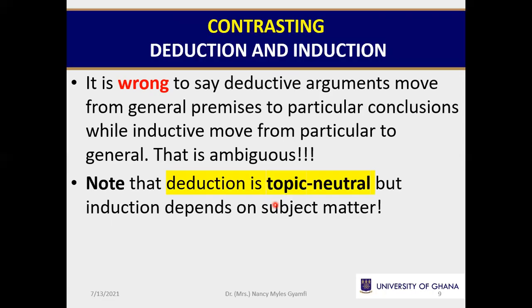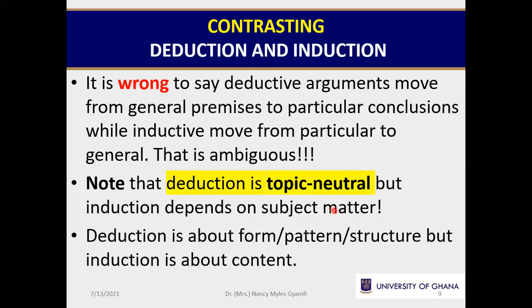The correct way to distinguish deduction from induction is what we gave you earlier. For a deduction, if the premises are true, it would require that the conclusion must also be true — otherwise you will create a contradiction. For induction, it is possible for the premises to be true, the conclusion false, and yet no contradiction is created. This is the litmus test. Also, we have already seen that deduction is topic neutral — a deductive argument is neutral to the topic being discussed. It doesn't focus on what the specific content or subject matter is. I could say 'all chichis are chachas; this thing is a chichi; therefore it is a chacha,' and we don't know what chichi and chacha represent, because we are interested only in the pattern, the form of thought.